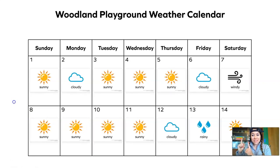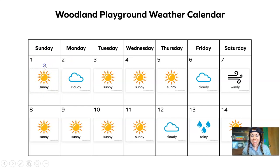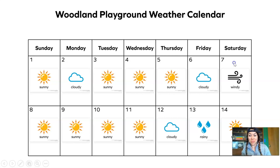Now check this out. This is the weather data for Woodland Elementary School's playground. You can see it's the same calendar — Sunday, Monday, Tuesday, and all the rest of the days of the week for two whole weeks. So we can see what the weather conditions were. Do you remember what this weather condition is that I'm circling? Yeah, this is sunny weather. What about this one that I'm circling? Yeah, that's cloudy weather. Do you remember what this symbol means that I'm circling? Yeah, that's windy weather. And what about this one right here? Yeah, that's rainy weather.